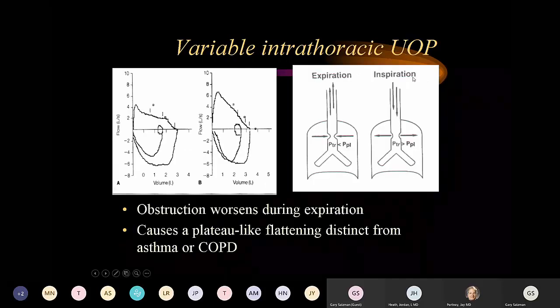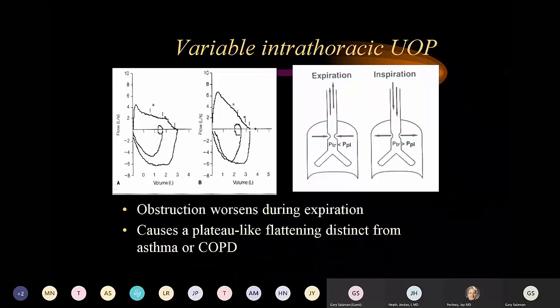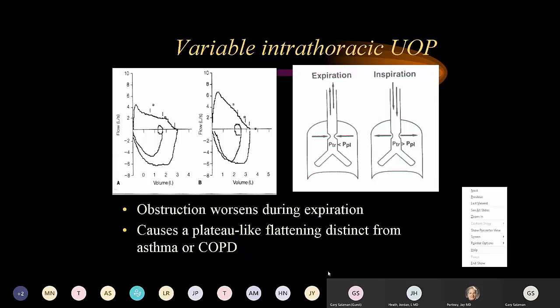Variable intrathoracic obstruction is fairly rare, typically caused by a ball-valve type tumor or polyp in the trachea below the vocal cords. These patients have a normal inspiratory loop but a flattened expiratory loop — obstruction worsening during exhalation — creating a plateau-like flattening different from COPD or asthma.